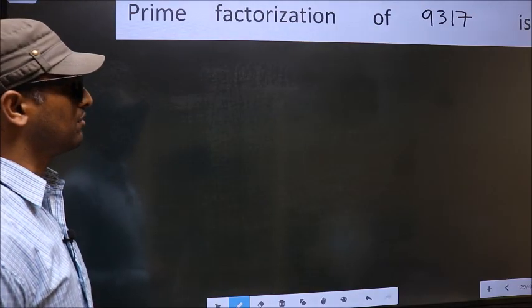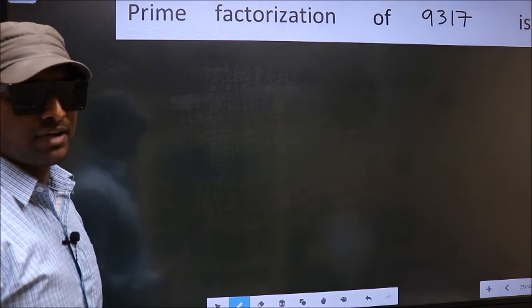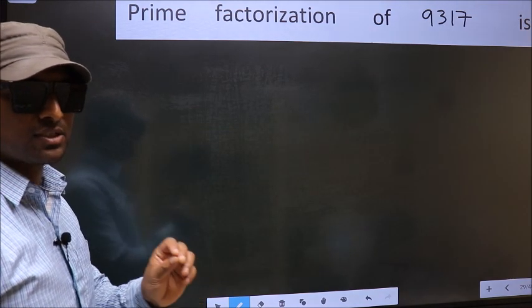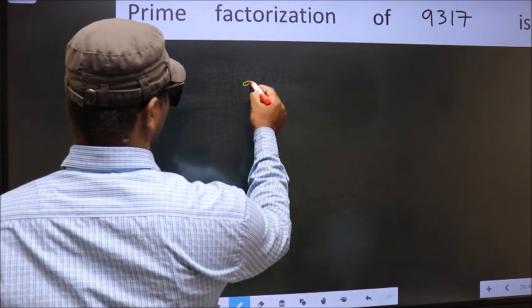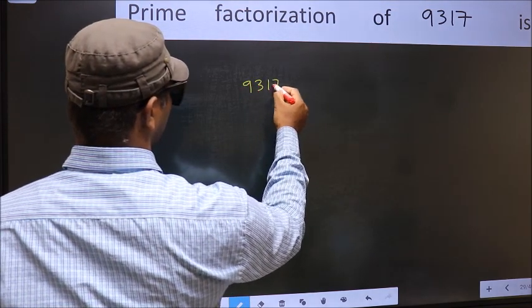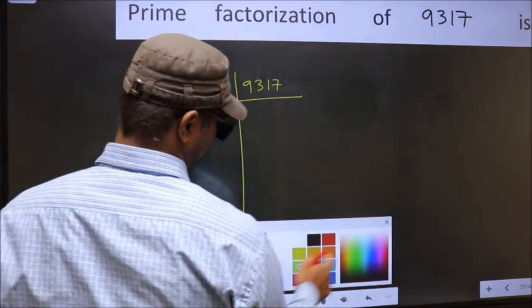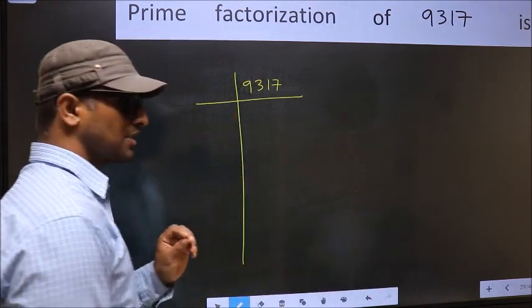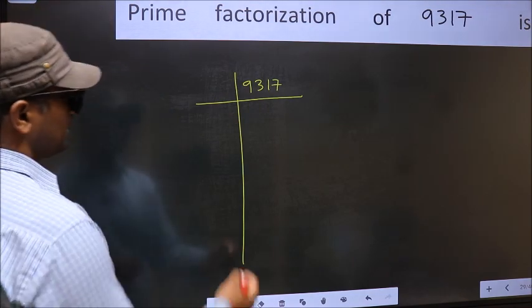Prime factorization of 9317. To do prime factorization, first we should frame it in this way. 9317. This is your step 1.